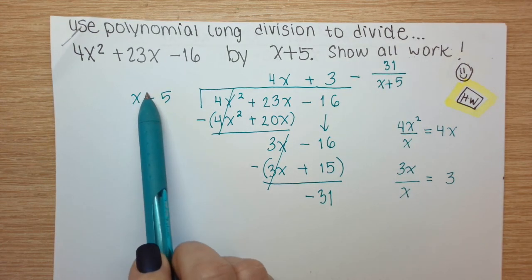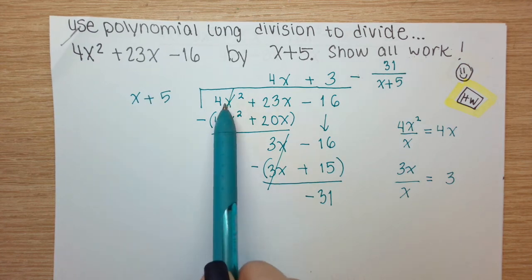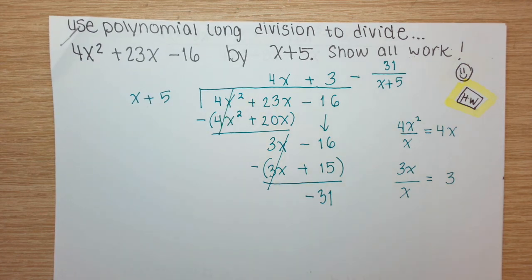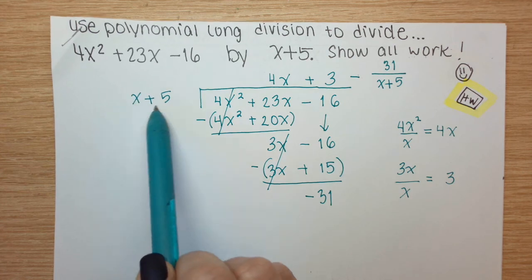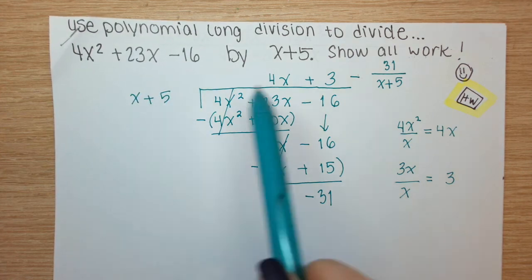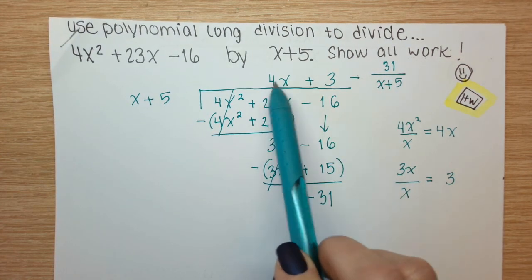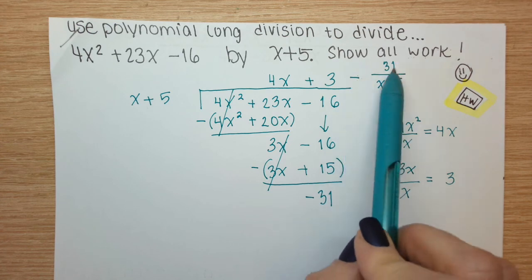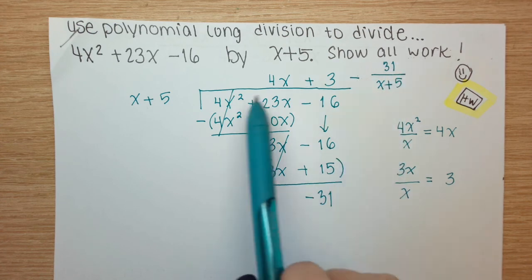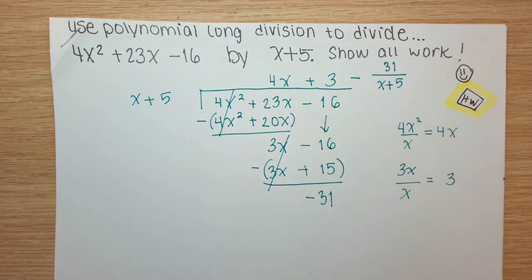x plus 5 is not a factor of 4x squared plus 23x minus 16. However, if I multiply x plus 5 by 4x plus 3 minus 31 over x plus 5, I will get the dividend 4x squared plus 23x minus 16.